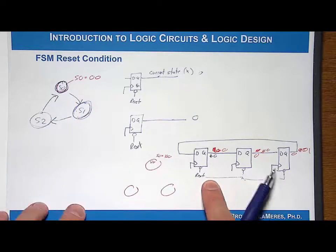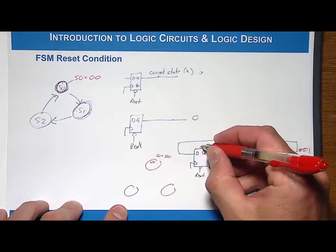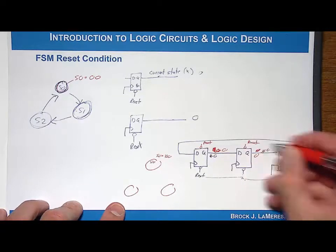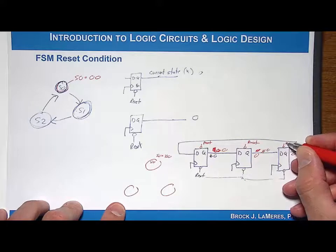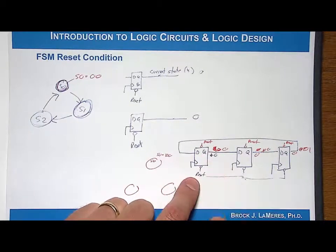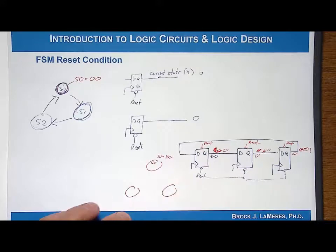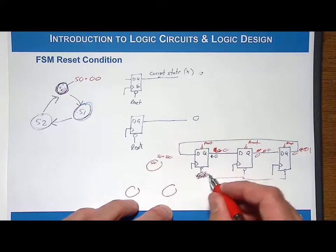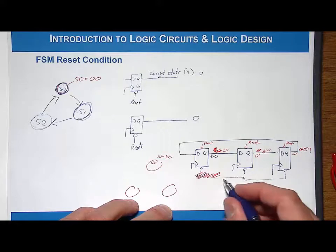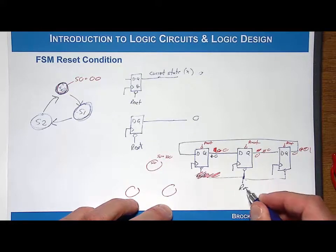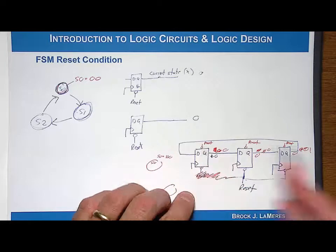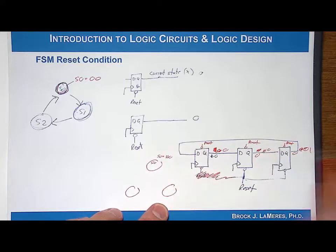So reset lines are only good if your start state has a code of all zeros. The solution is quite simple: flip-flops also have a preset input, which is also active-low. When you assert it, it drives Q to a one — it acts the same as reset except it drives to one instead of zero. So in this situation, we don't want to use reset on the first D flip-flop; we want to use preset instead. We'll connect preset to get that one into the initial state.